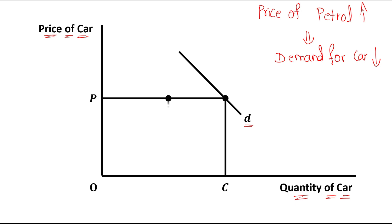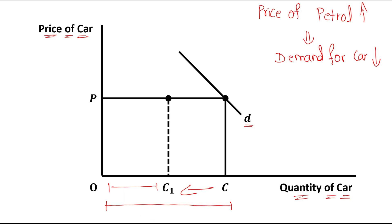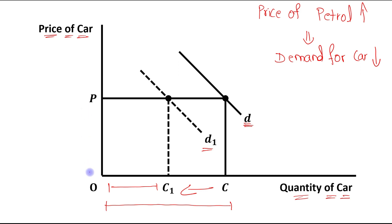Earlier the demand for car was OC, and now it has been reduced to OC1. This leads to a leftward shift of the demand curve — from D to D1. Notice that there is no change in the price of car; the price of car remains OP. The demand for car has been reduced because the price of petrol increased. When at the same price the demand decreases, it leads to a leftward shift of the demand curve.